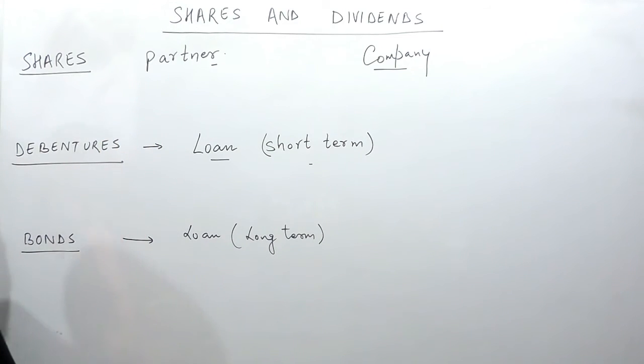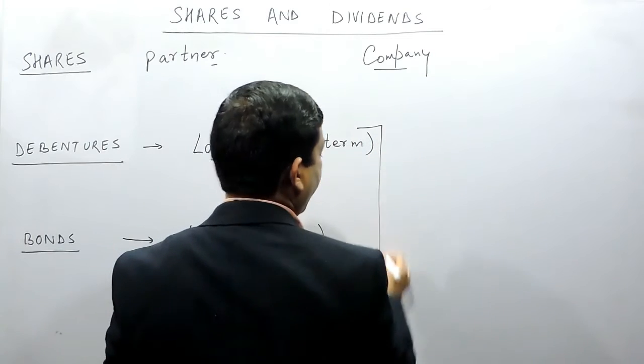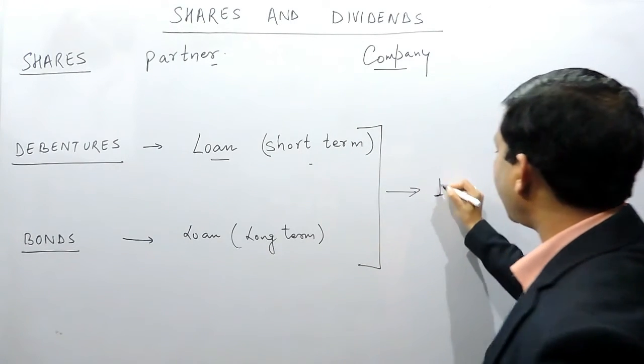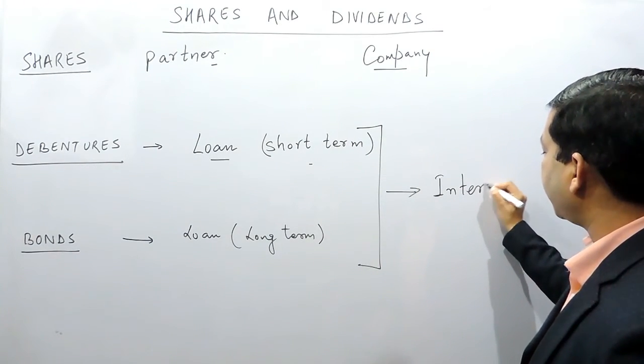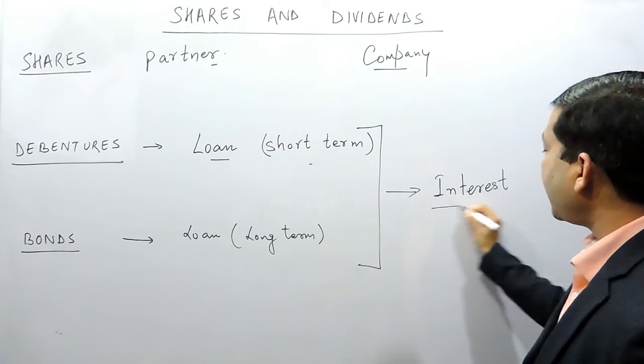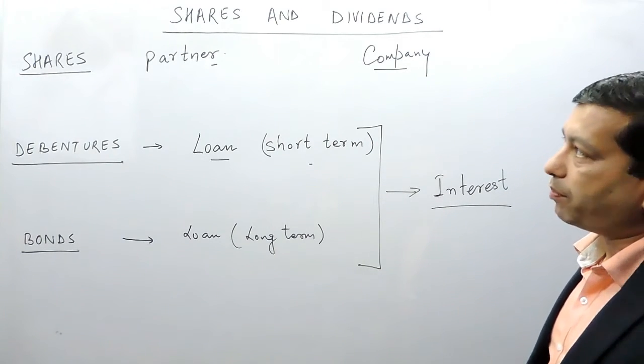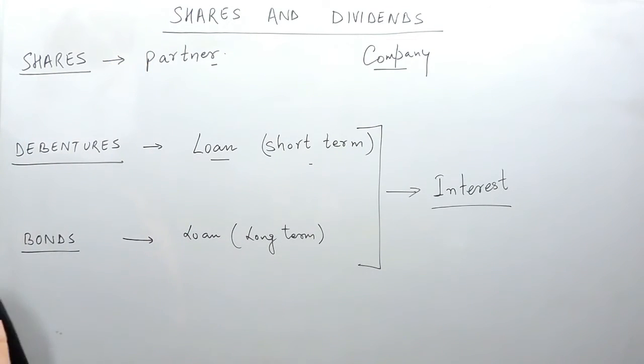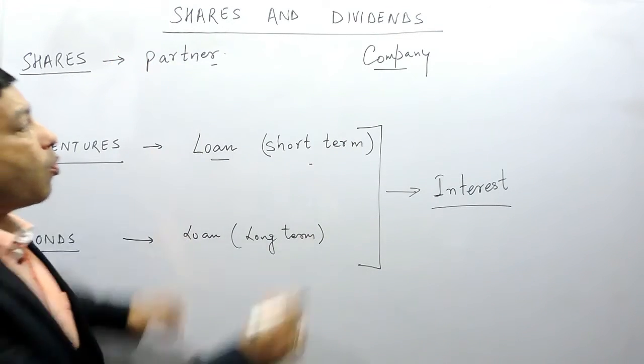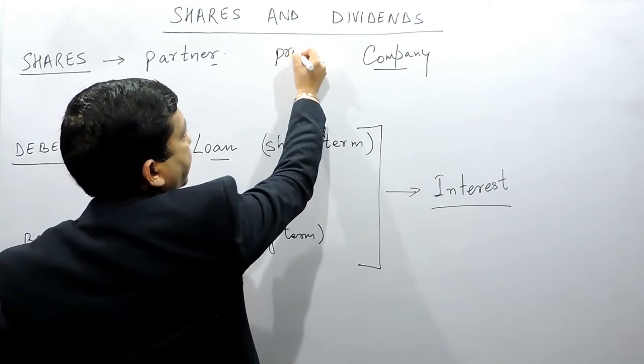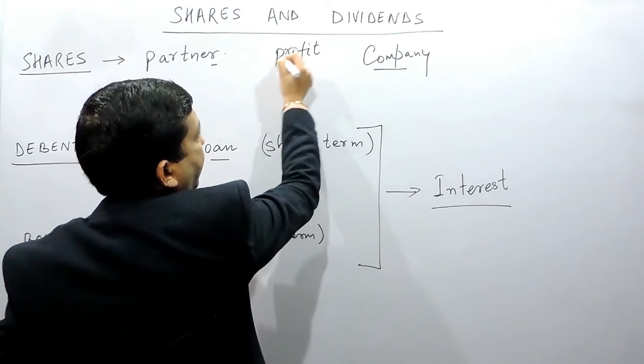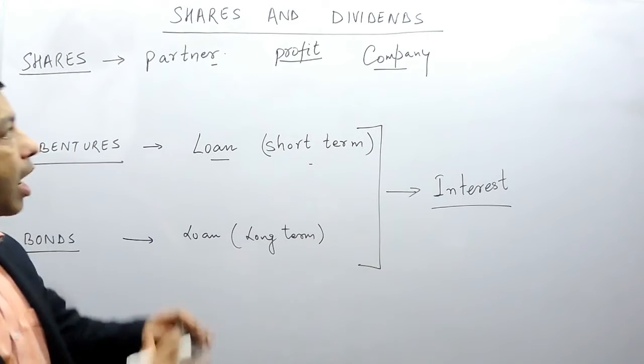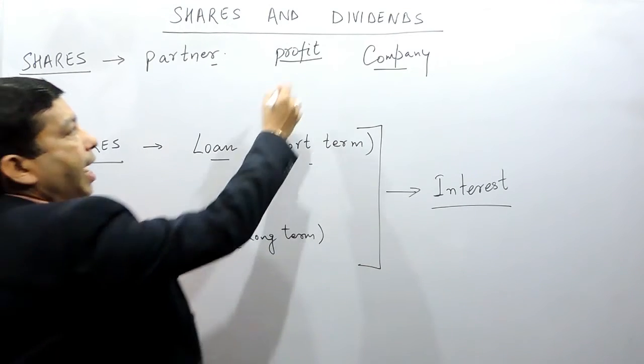On debentures and bonds, we only get interest from the company and we are not the partners of the company. While in the case of shares, as we are the partner of the company, whatever profit the company gets, that profit is divided among all the shareholders and that profit is known as dividend.